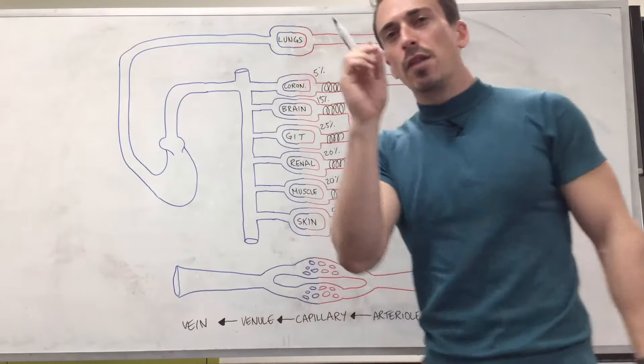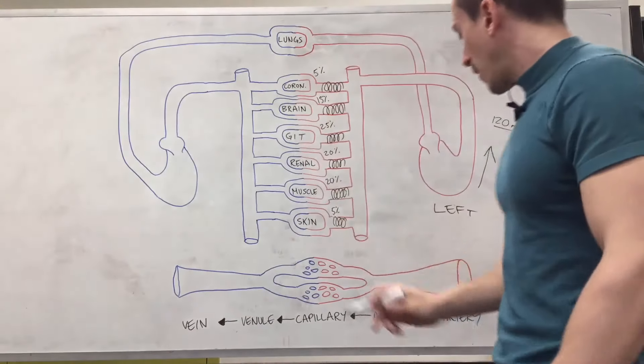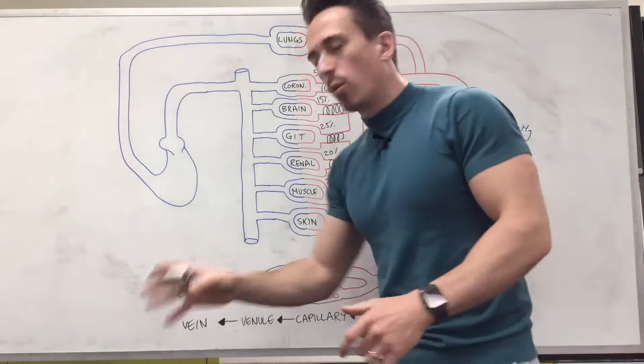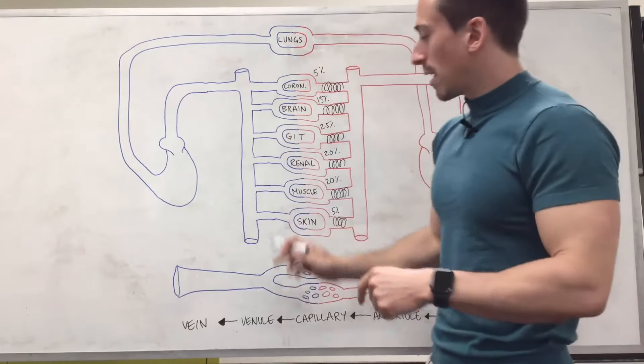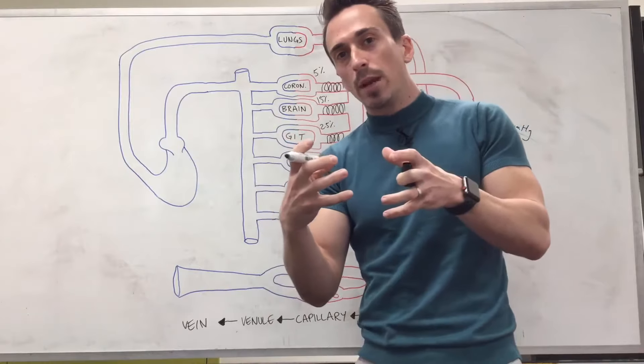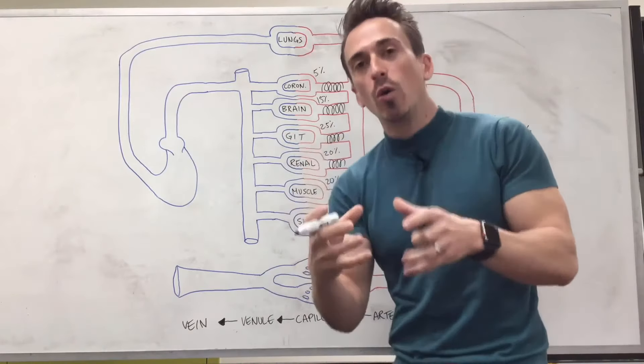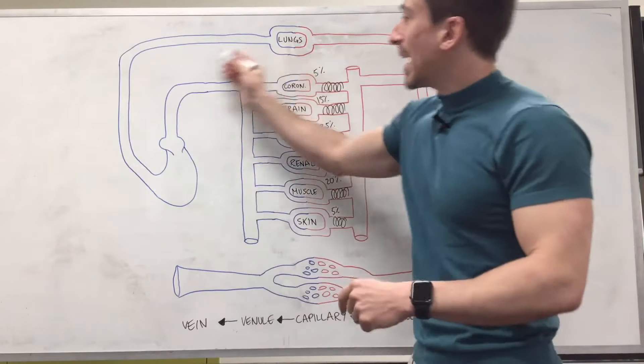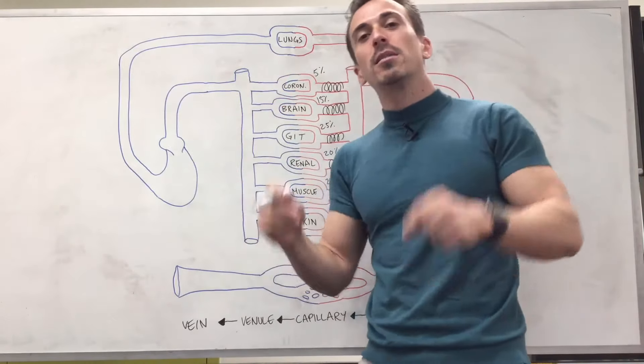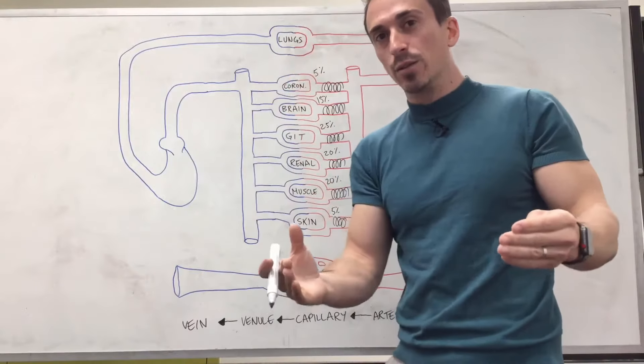Now venules and veins have a thinner wall than you'd find with the arteries and arterioles but what you'll find is they can be larger in diameter and because of their thin walls and their larger diameter it means they can hold most of the blood. Most of the blood in the circulation is actually sitting in the venous system which makes them capacitance vessels.